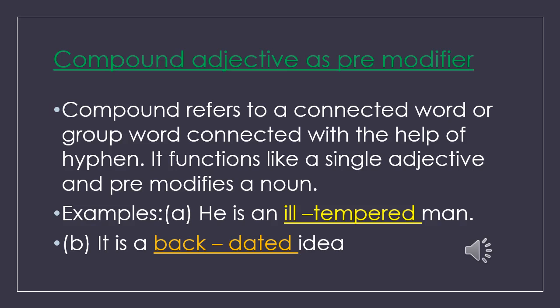Dear learners, let's come to the next slide. Compound adjective as premodifier. Compound refers to a connected word or group of words connected with the help of a hyphen. It functions like a single adjective and premodifies a noun. Example A: 'He is an ill-tempered man.' Example B: 'It is a backdated idea.' Here, 'ill-tempered' and 'backdated' are compounds used as premodifiers of 'man' and 'idea.'